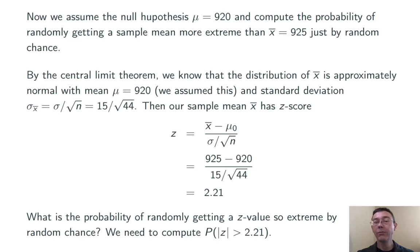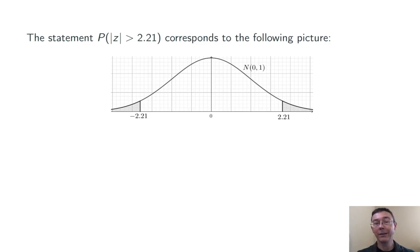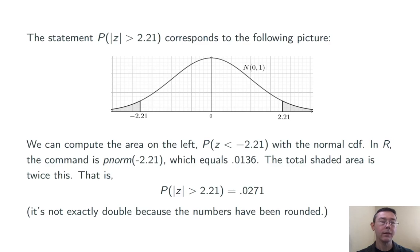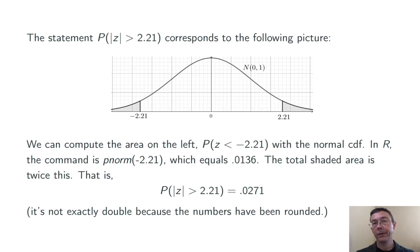To compute our p-value, we need to find the probability of randomly getting a z-value at least this extreme just by chance — that is, the probability that z is greater than 2.21 in absolute value. We need the probability of randomly getting a z-value bigger than 2.21 or less than negative 2.21 — that shaded area in the picture. The strategy is to get one of the shaded areas and double it, since it's a symmetric picture. In R, the command is pnorm of negative 2.21, which gives about 0.0136. Doubling that, the total shaded area is 0.0271.